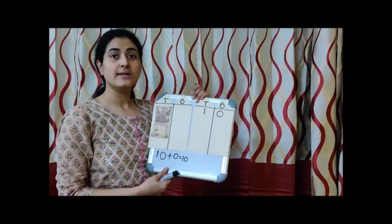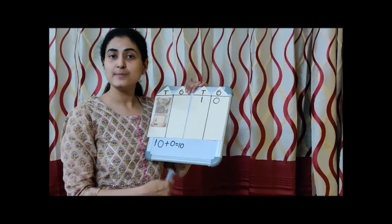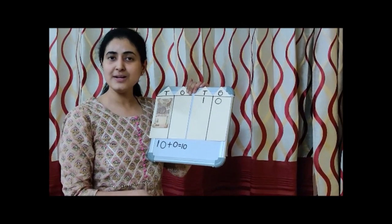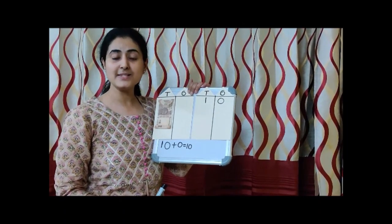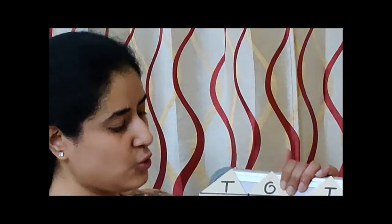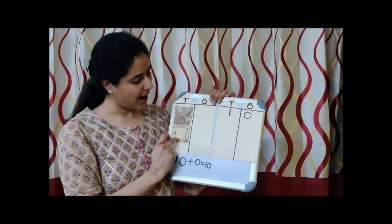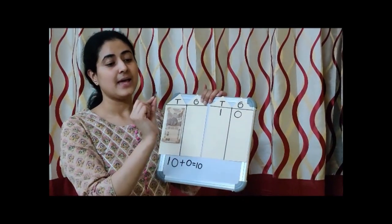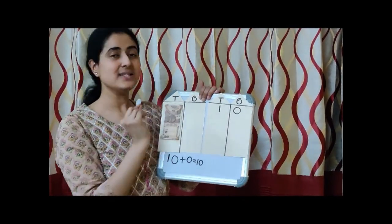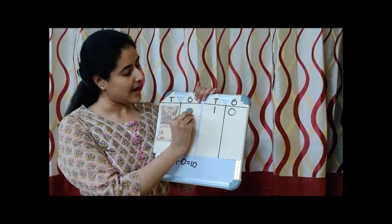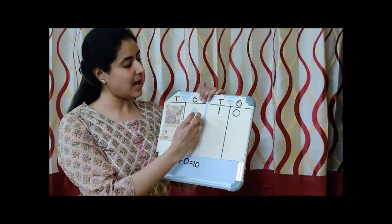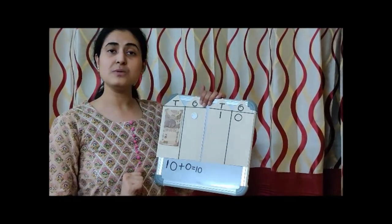Now somebody is coming. Look — did you hear the knocking sound? Oh, somebody has come. Who has come? Let us see. One extra has come. Will this one extra go to Ten's house? No. One extra will not go to Ten's house — only one ten will be in Ten's house. Then it will go to One's house. It has gone to One's house now.